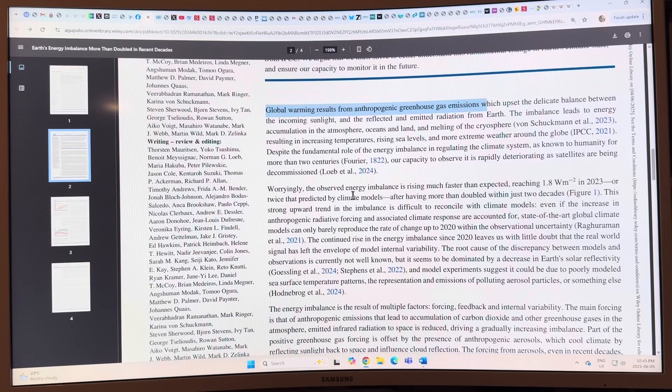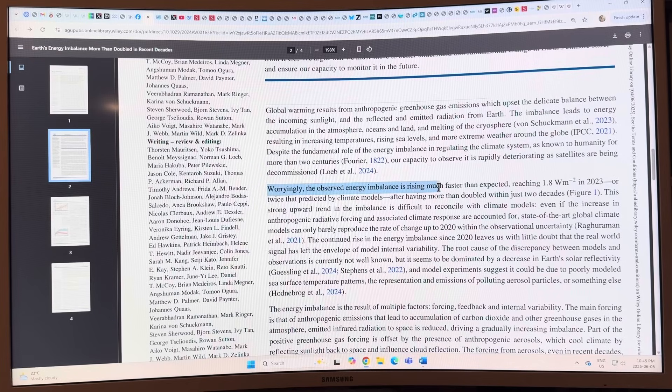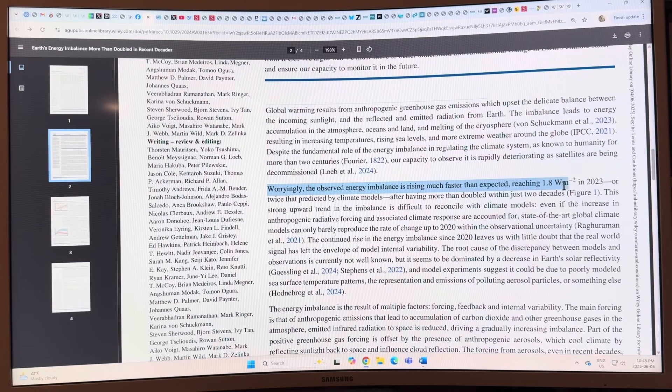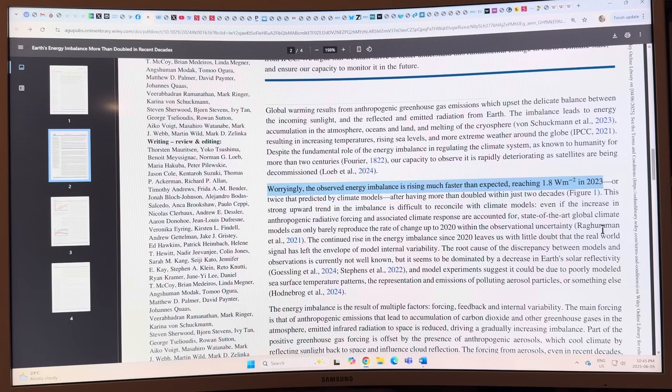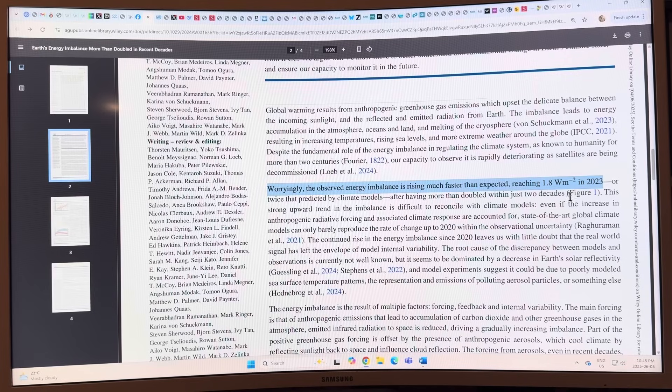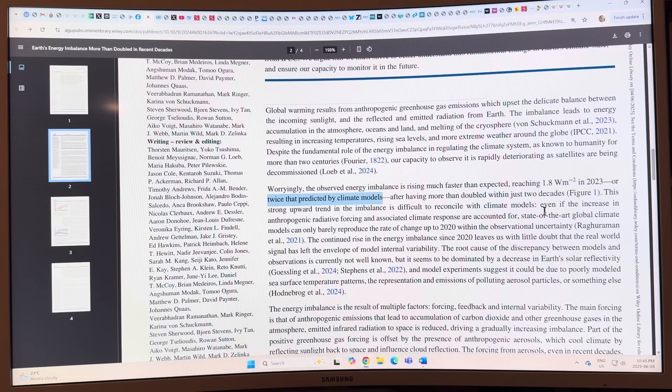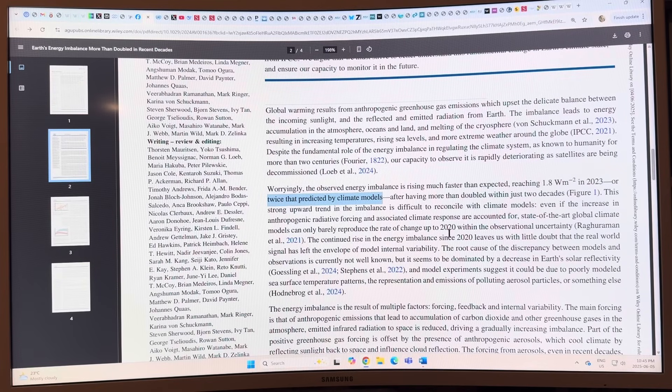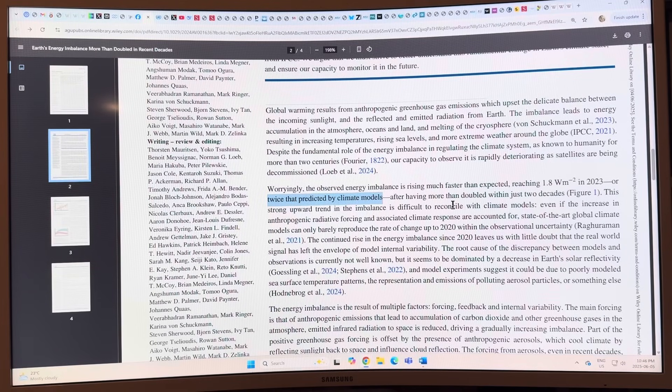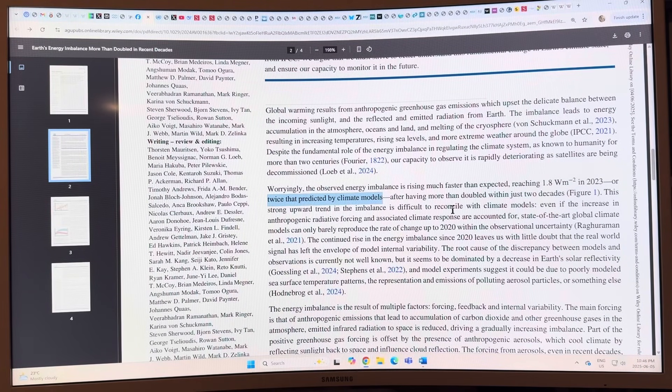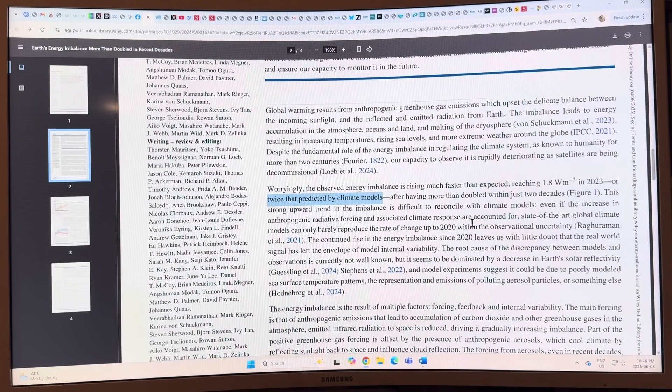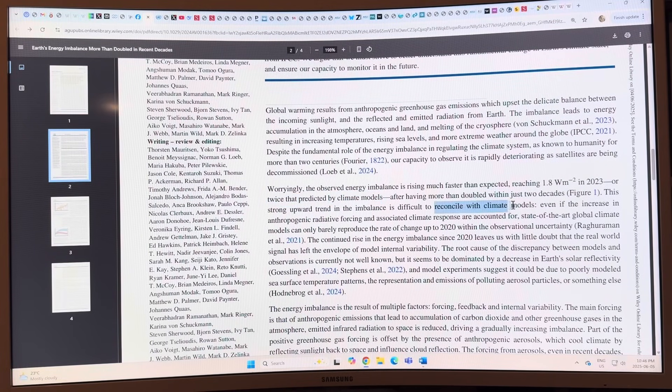They say worryingly, the observed energy imbalance is rising much faster than expected. It reached 1.8 watts per square meter in 2023, right? I gave that number in the last video. Or twice that predicted by climate models. It was 0.6 between 2001 and 2014 if you recall. So it's three times larger than that. They say twice that predicted by climate models, but it's three times more than the decadal average from 2001 to 2014.